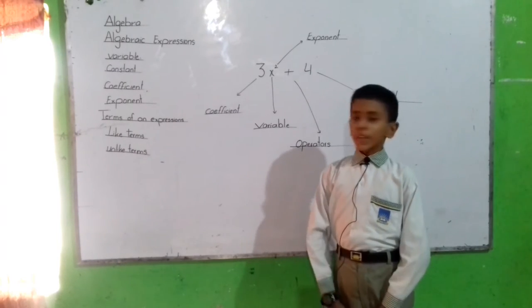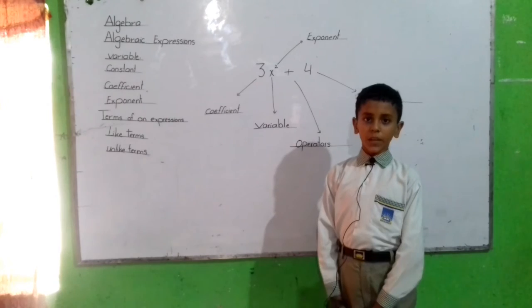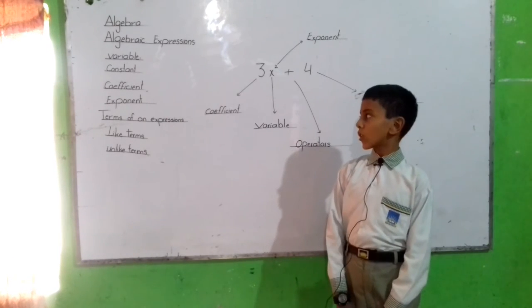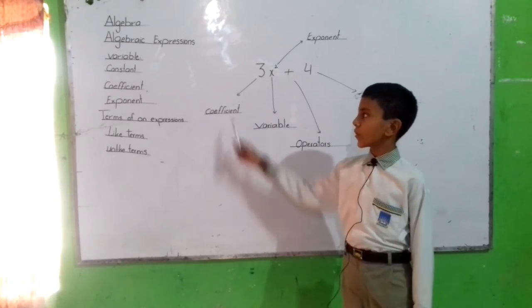Coefficient. The number which is multiplied by variable is called coefficient. In this expression, 3 is coefficient.